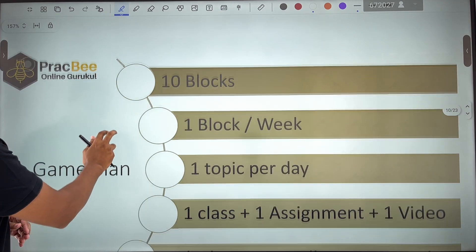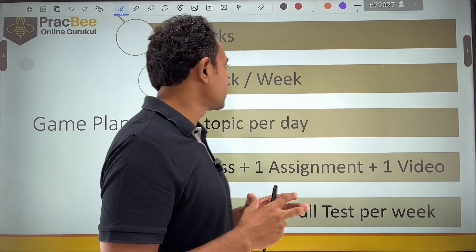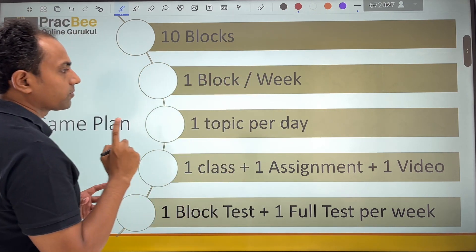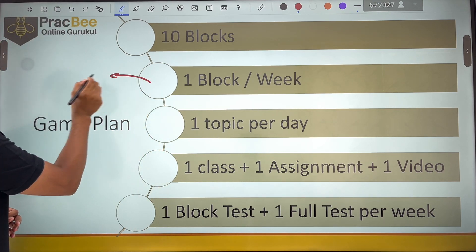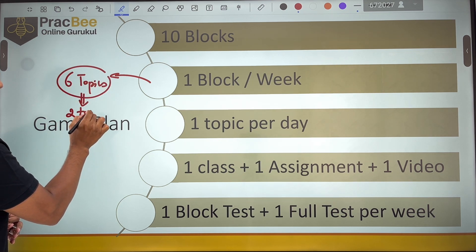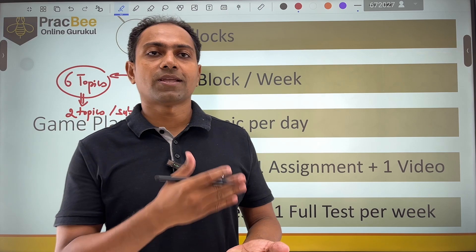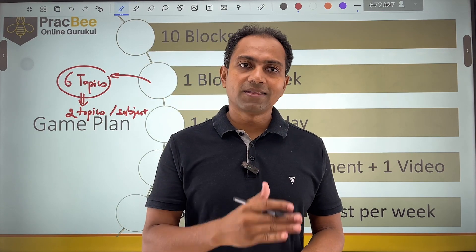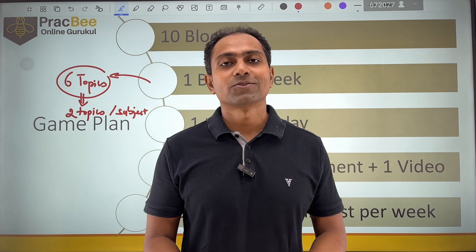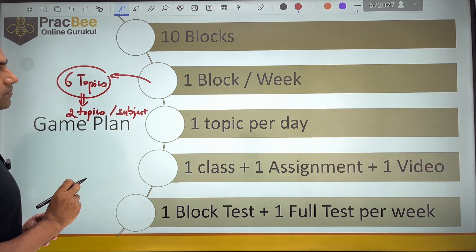Once you have understood the weightage, this should be the idea to move forward. Divide this weightage into a 10-week plan or 10 blocks where your strategy should be that you are doing one of these blocks in a week. In that block you should target that I should at least do 6 topics in a week. That would mean 2 topics per subject. So if you are one of those person who get bored by a subject, you can do 2 days physics, then next day chemistry, then mathematics. But if you want to focus more on one subject in a continuous manner, you can choose 2 days physics, 2 days chemistry, and 2 days mathematics.